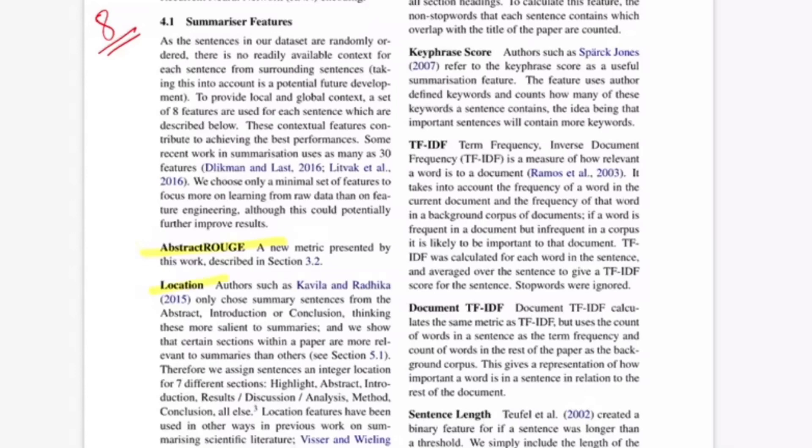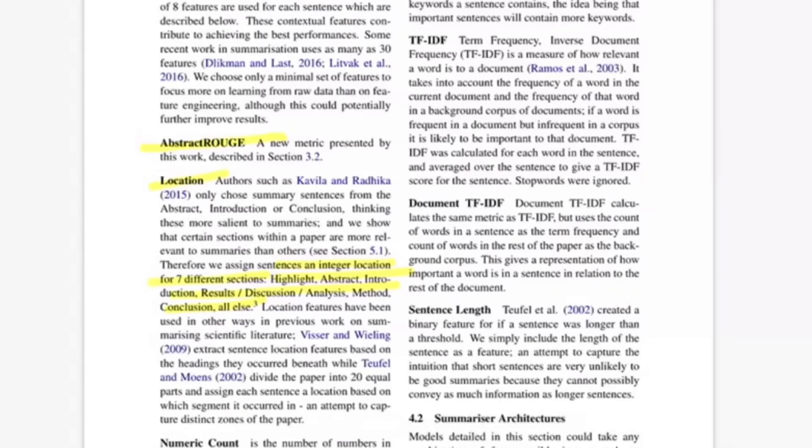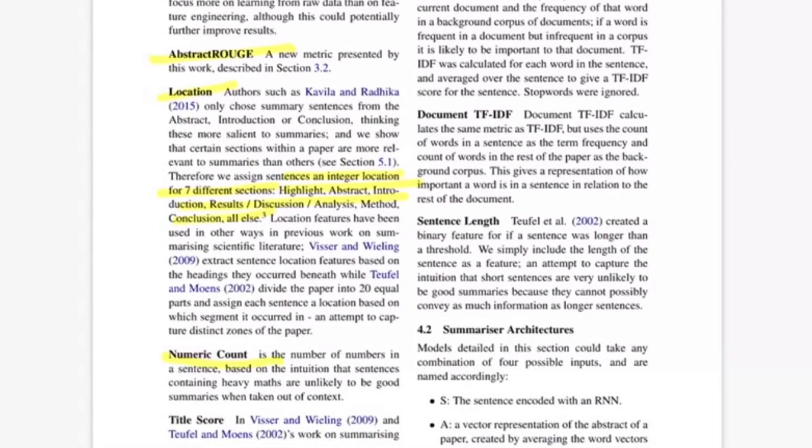The second feature they talk about is location. They assign sentences with integer location for seven different sections. All the sections in the paper get an integer value as second dimension to the feature representation. The idea is some parts of the full paper contribute more towards summary and some less. For example, literature survey and results might not contribute as much compared to conclusion or introduction. The third feature is numeric count, based on the intuition that sentences containing heavy maths are unlikely to be good summaries when taken out of context.